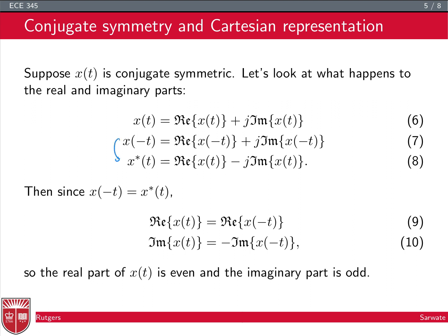Setting x(−t) = x*(t), the real parts must be equal and the imaginary parts must be equal. This means Re{x(t)} = Re{x(−t)}, so the real part is even. And Im{x(t)} = −Im{x(−t)}, so the imaginary part is odd. This is much easier to work with: conjugate symmetry means the real part is even and the imaginary part is odd.